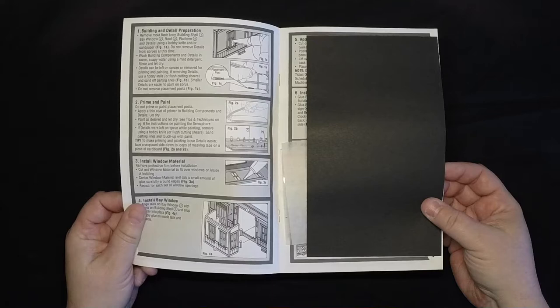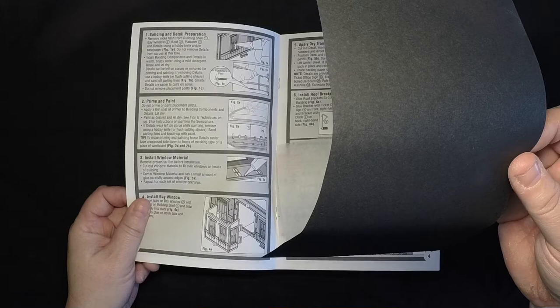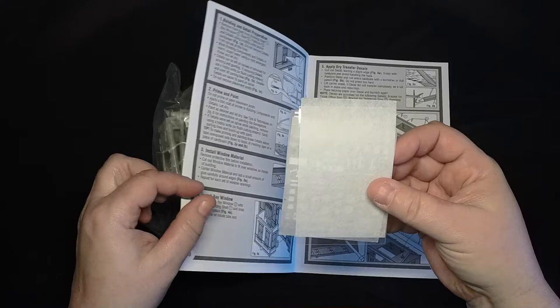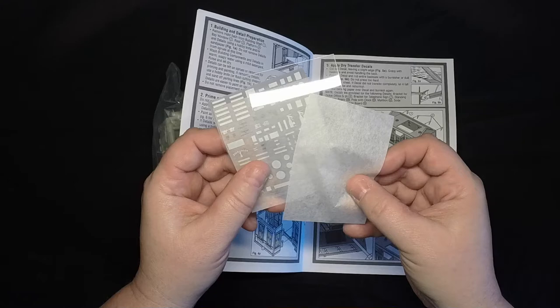This is a sheet of blackout paper that you can use for some of the windows. Then you have some clear sheet, which is going to be used for windows, and it has this protective paper, so you want to keep that with it.